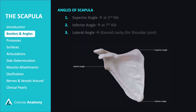The angles of the scapula correspond to specific landmarks on the ribcage. The superior angle is at the level of the second rib. The inferior angle aligns with the seventh rib. And the lateral angle features the glenoid cavity, which articulates with the humerus to form the shoulder joint.